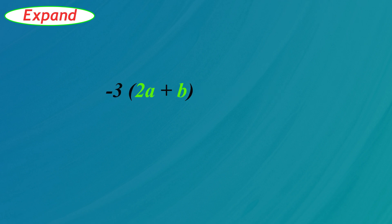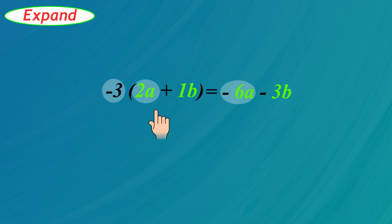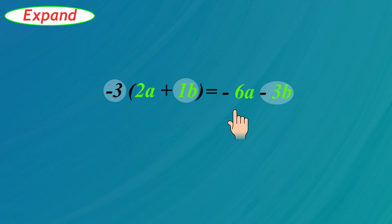Expand negative 3 times 2A plus B in parentheses. In this example notice that the multiplier is a negative number. Also remember that there is a 1 in front of the B. To expand: negative 3 times 2A is negative 6A, and negative 3 times 1B is negative 3B. The answer is negative 6A minus 3B.